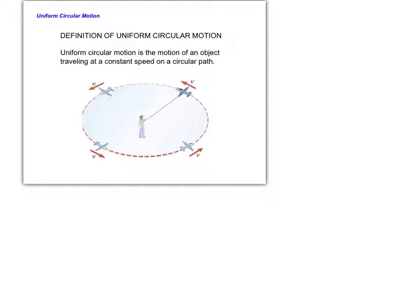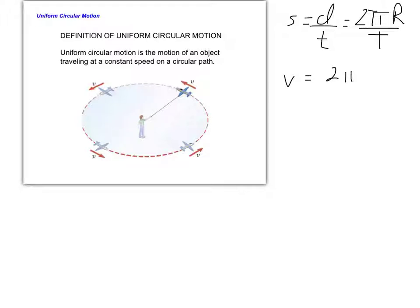How do we describe that? If this airplane travels around in one circle, it has traveled a distance of 2πr — the circumference of the circle — and it has done so in a time we define as the period: the time to complete one full circle. So we call the tangential velocity 2πr over T.